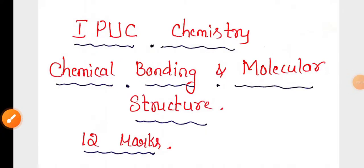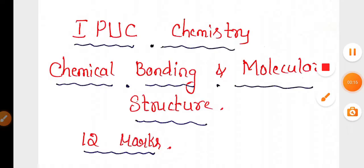Chemical bonding and molecular structure is one of the important chapters in FSc chemistry. In the annual exam you will get 12 marks from this chapter. This video covers some of the important questions and answers of this chapter for the annual exam.